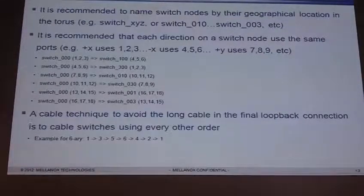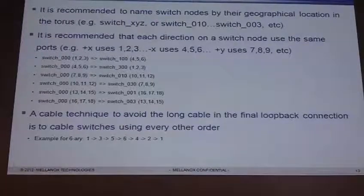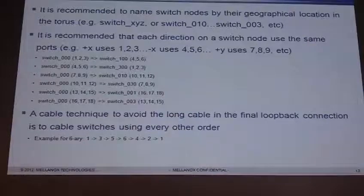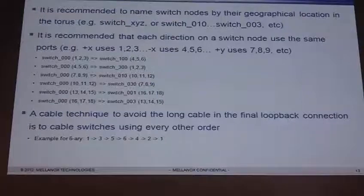Some cabling techniques if you're going to build a Taurus: it's recommended to name switch nodes by their geographical location within the Taurus — for example, switch X,Y,Z, or switch 0,1,0, or switch 0,0,3, depending on coordinates. It's also recommended that each direction on a switch node use the same ports consistently. For example, the plus-X direction always uses ports 1, 2, and 3, and the minus-X direction always uses ports 4, 5, and 6. So the connection from switch 0,0,0 to switch 1,0,0 would always be ports 1, 2, and 3 connecting to ports 4, 5, and 6. Keeping it consistent makes it very easy to look at your topology and verify everything is built correctly.